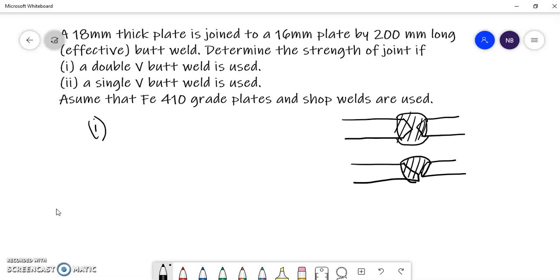As we know, in the double V butt weld joint the penetration takes place completely, and therefore the throat thickness is given by the thickness of the thinner plate. In our case it is 16 mm. The effective length is given to us as 200 mm.